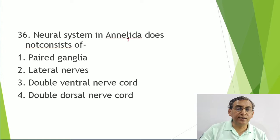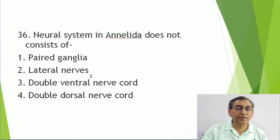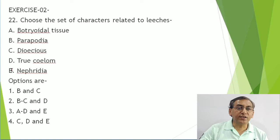The neural system of Annelida consists of paired ganglia - correct; lateral nerves - correct; double ventral nerve cord - correct. What is not present is a double dorsal nerve cord, because the presence of a dorsal nerve cord is the character of Chordata. Annelida is a non-chordate.